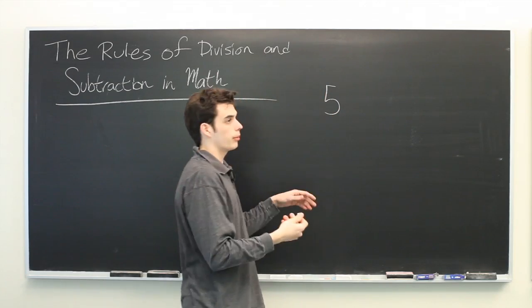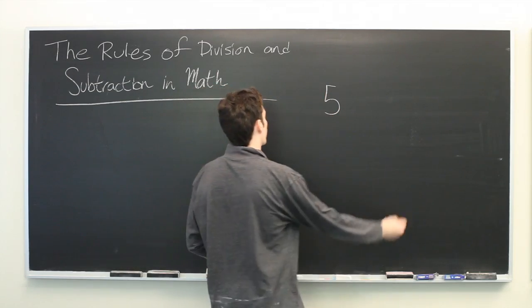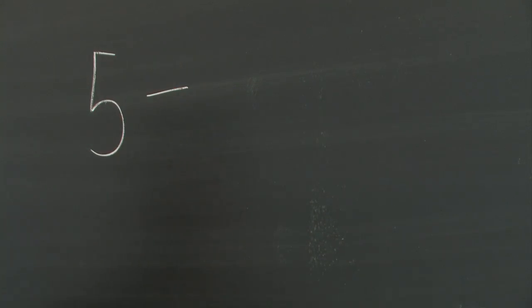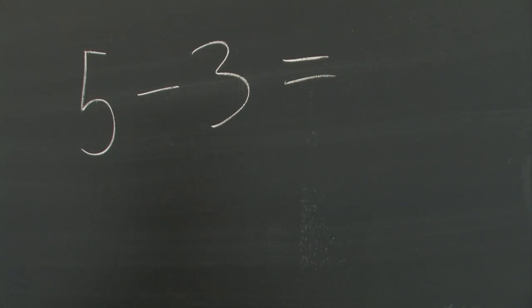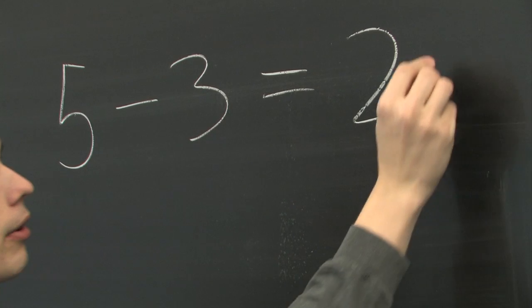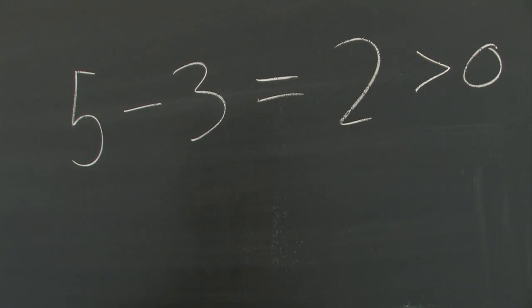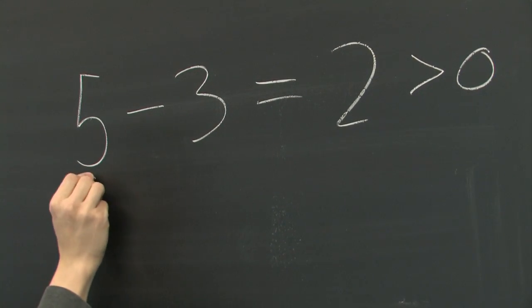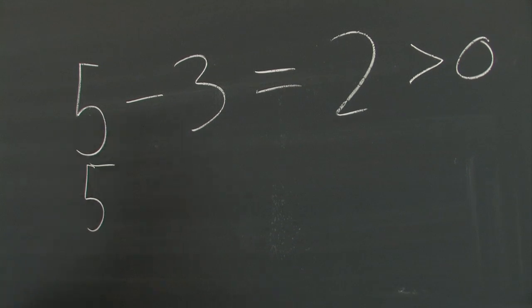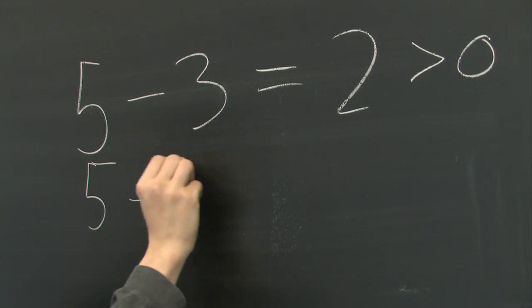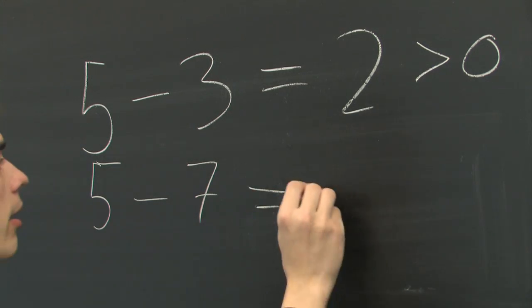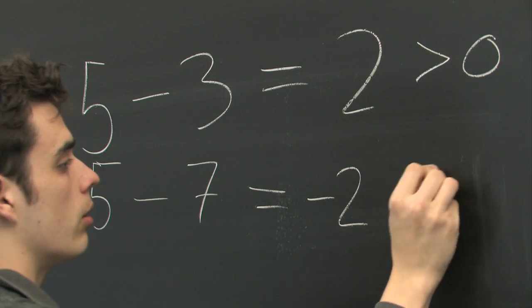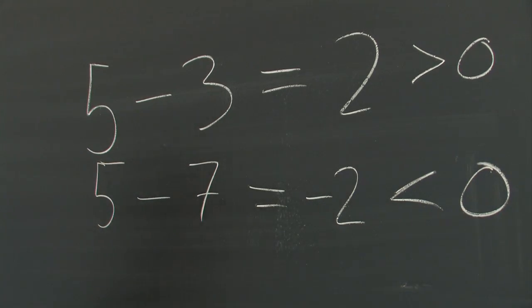So, suppose that we have some number, 5, and we subtract a quantity which is less than 5, let's say 3. We will get a number which is greater than 0. Similarly, if we subtract a number that is greater than 5, such as 7, we will end up with a number, negative 2, which is less than 0.